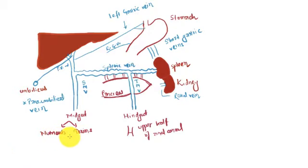The superior mesenteric vein, inferior mesenteric vein, splenic vein, and left gastric vein all pass through the liver along the portal vein, forming portal circulation. The goal is to reach the liver. Why do these veins need to pass through the liver? Because the liver is known as the kitchen of the human body.